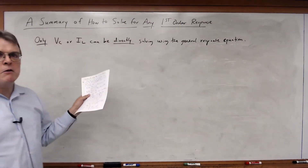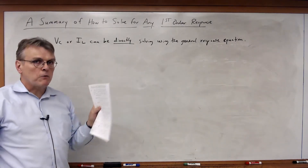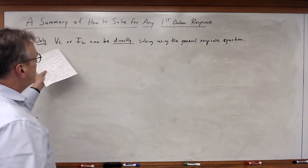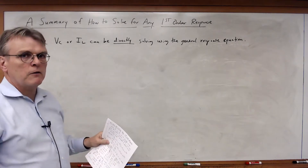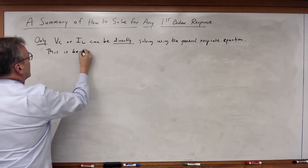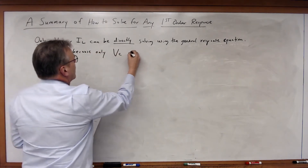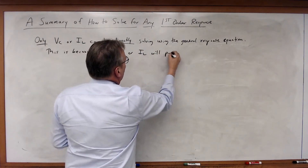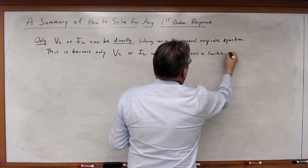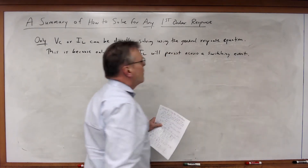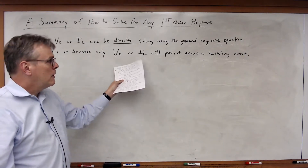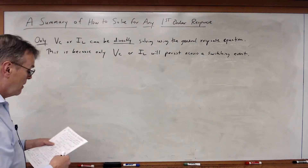This is very important: if you try to use the general response equation for any other quantity besides the voltage across the capacitor or the current through the inductor, you're probably going to get the wrong answer. The reason is that only the voltage across the capacitor or the current through the inductor will persist across a switching event, because they cannot change instantaneously.